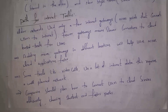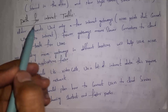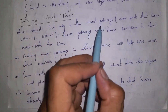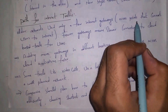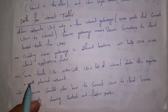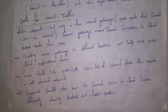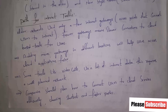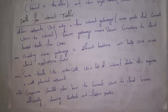Finally, I will explain paths for internet traffic. Older networks used only a few internet gateways — access points that connect users to the internet. Fewer gateways mean a slower connection between the user and the cloud. So if we create more gateways in different locations, there will be faster connections. For example, video calling applications like Skype and Zoom consume a lot of internet data, so they need a well-planned network. In order to connect users to the cloud quickly, companies must create the shortest and fastest paths.